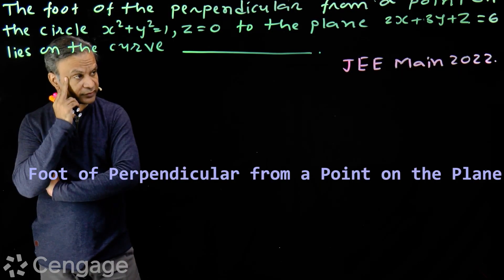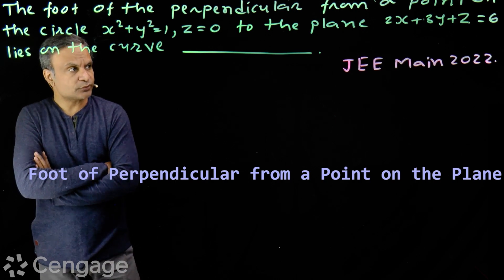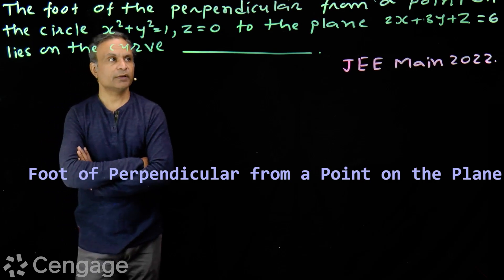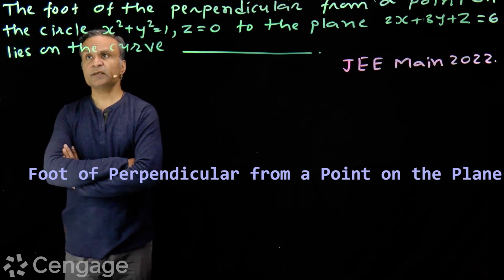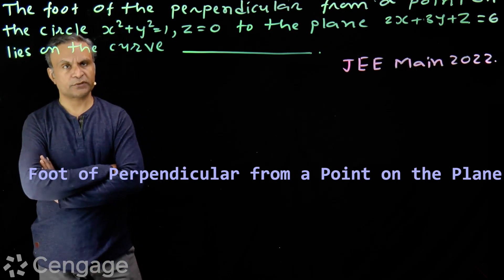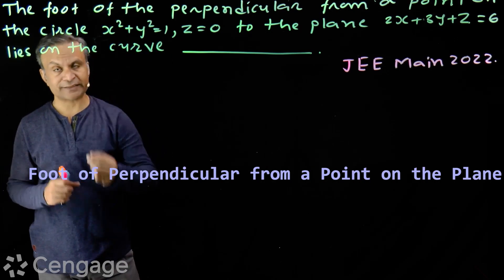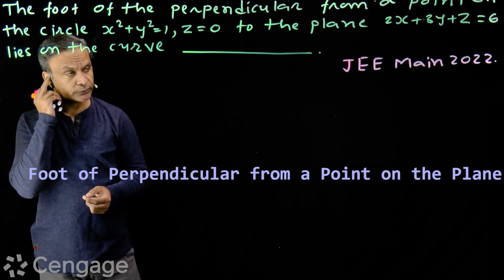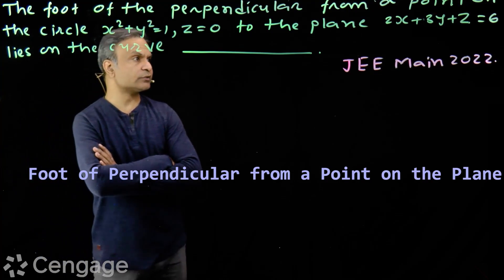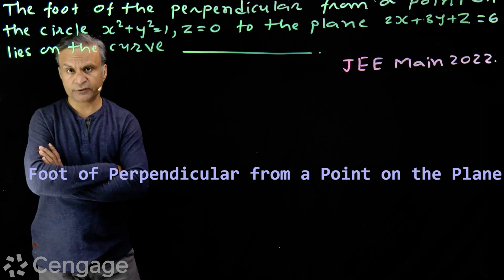Here we have a very interesting and conceptual question. The question is: the foot of the perpendicular from a point on the circle having equations x² + y² = 1 and z = 0, to the plane having equation 2x + 3y + z = 6, lies on which plane?